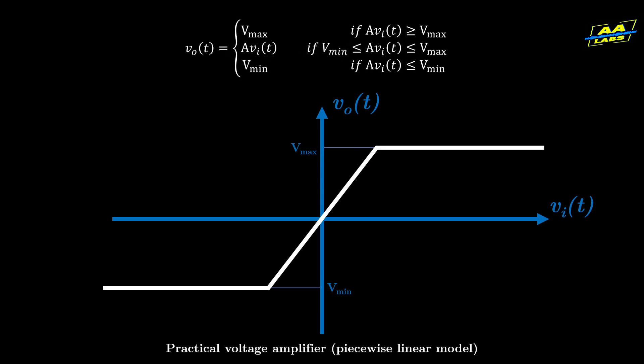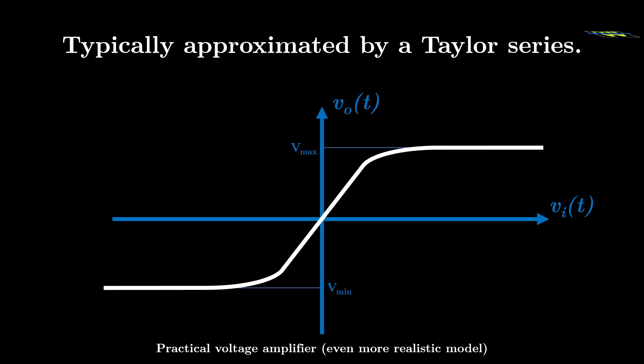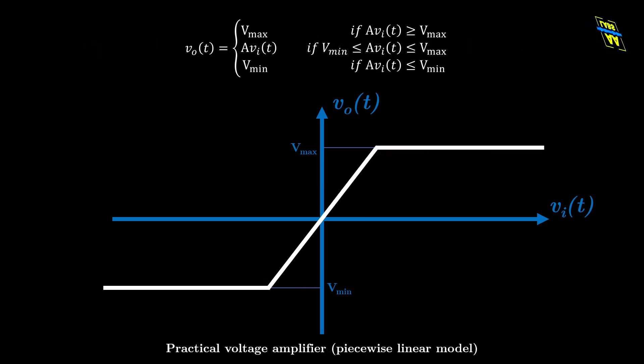However, all practical amplifiers have maximum and minimum voltages that they can output. We can model an amplifier with this piecewise linear function. In actuality, the sharp non-differentiable points are rounded off. If further precision is necessary, this function can be approximated by a Taylor series, but we are getting beyond the scope of the video. If an input is present such that the output is capped by one of these bounds, we say that the amplifier is saturated.